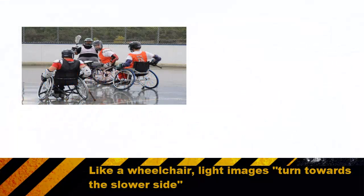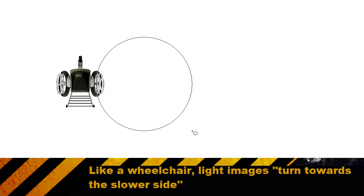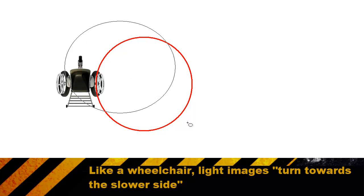To understand how light waves behave when passing through a medium, we simply need to understand a very simple concept: how wheelchairs turn. If we imagine the man on the right turning his wheelchair and we track the path of his wheel, we can see that the outside wheel will have to travel a much longer distance than the inside wheel. Looking at a top-down view makes this even easier to illustrate.